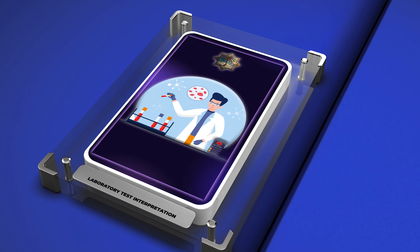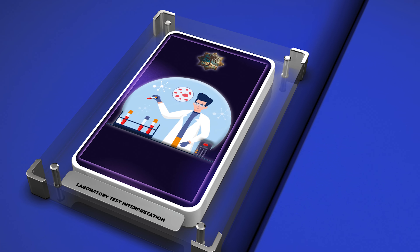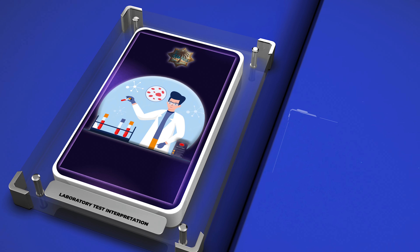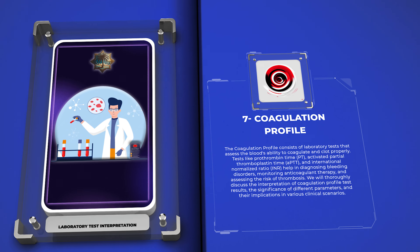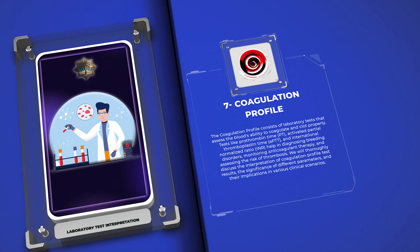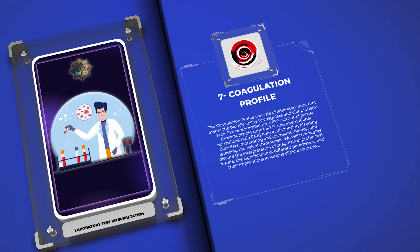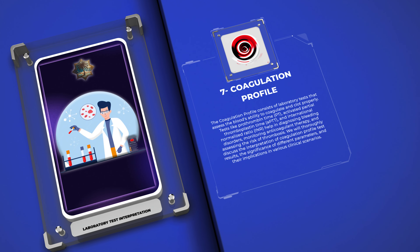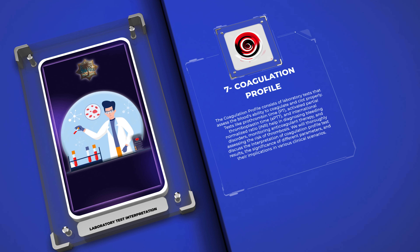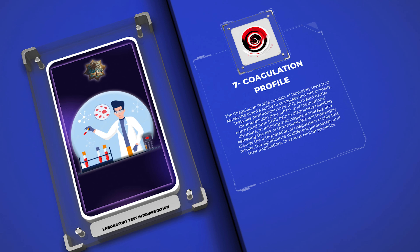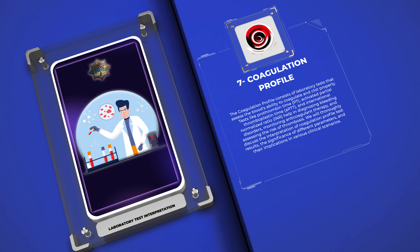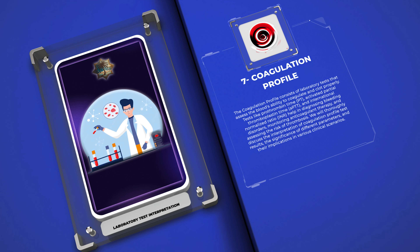The coagulation profile consists of laboratory tests that assess the blood's ability to coagulate and clot properly. Tests like prothrombin time (PT), activated partial thromboplastin time (aPTT), and international normalized ratio (INR) help in diagnosing bleeding disorders, monitoring anticoagulant therapy, and assessing the risk of thrombosis. We will thoroughly discuss the interpretation of coagulation profile test results, the significance of different parameters, and their implications in various clinical scenarios.